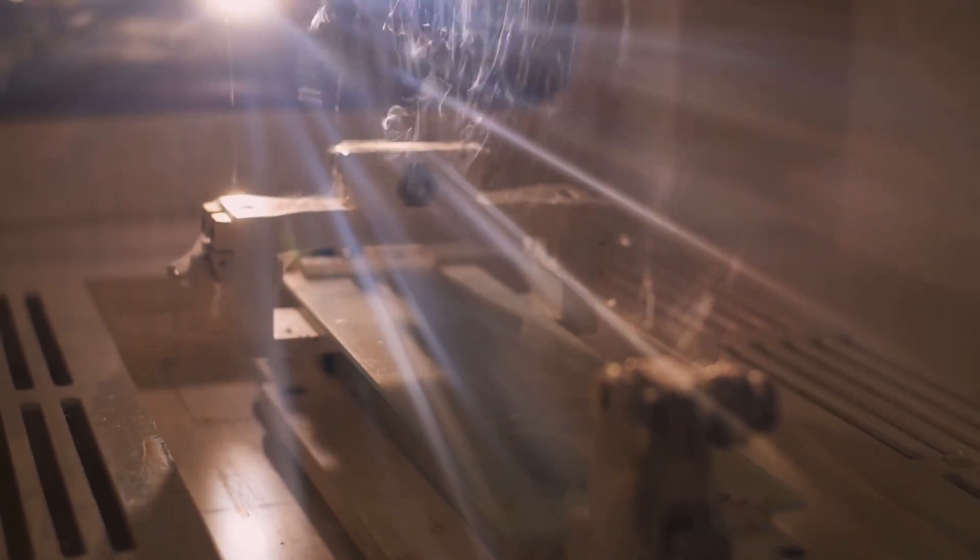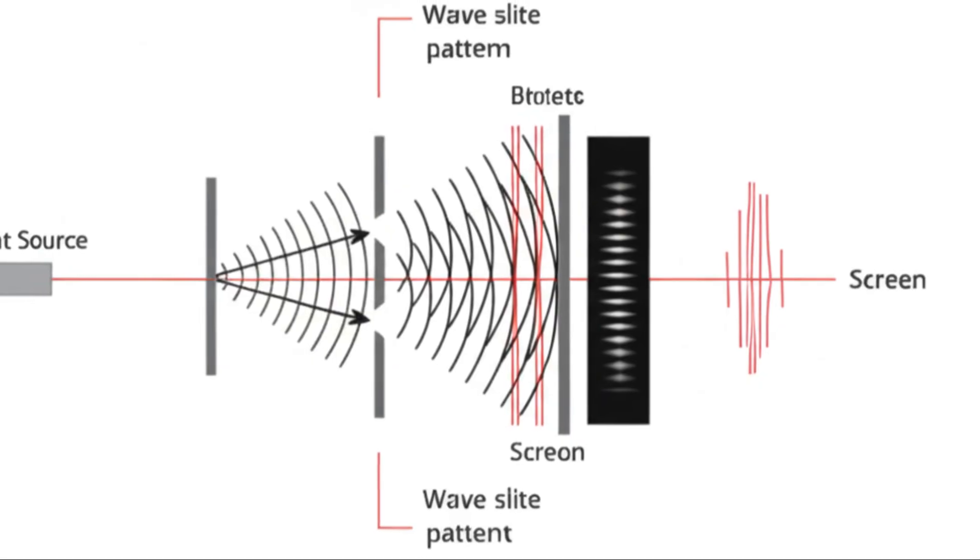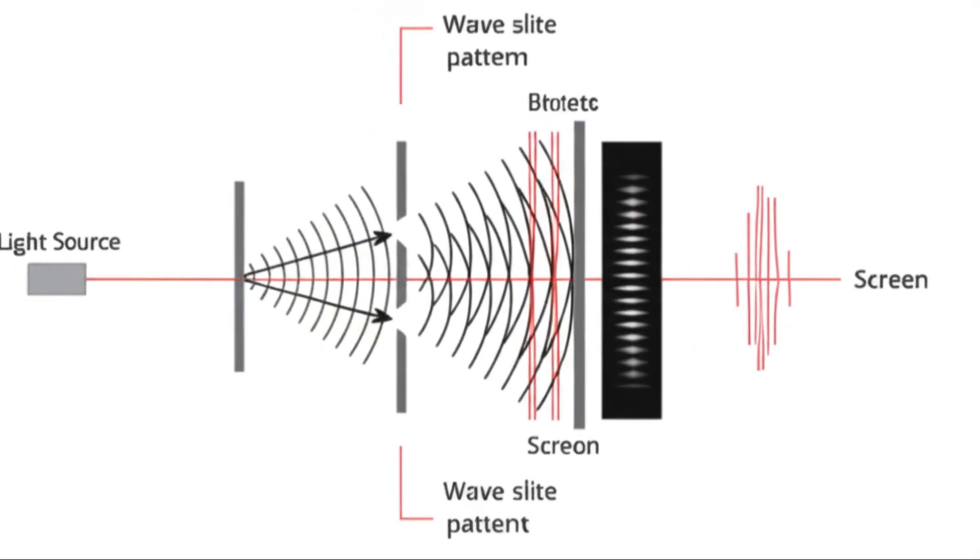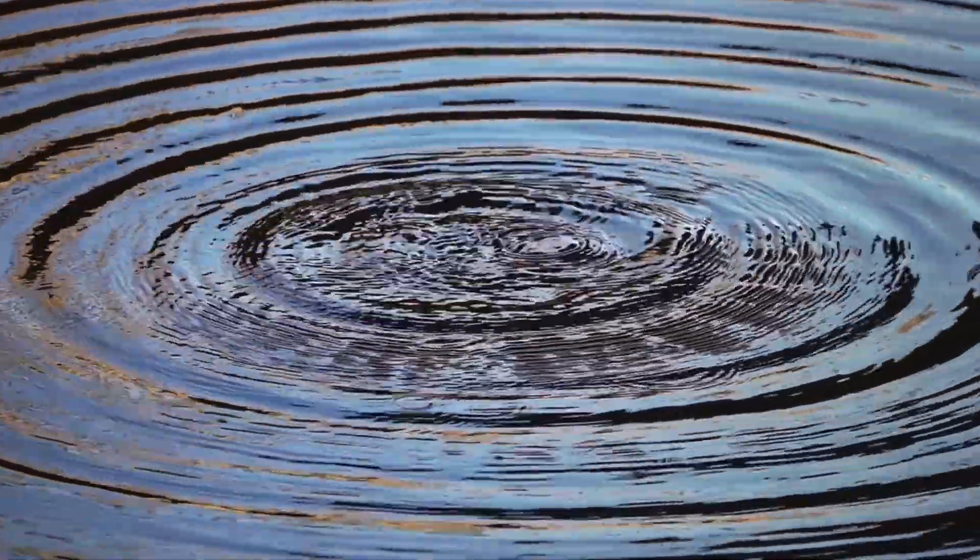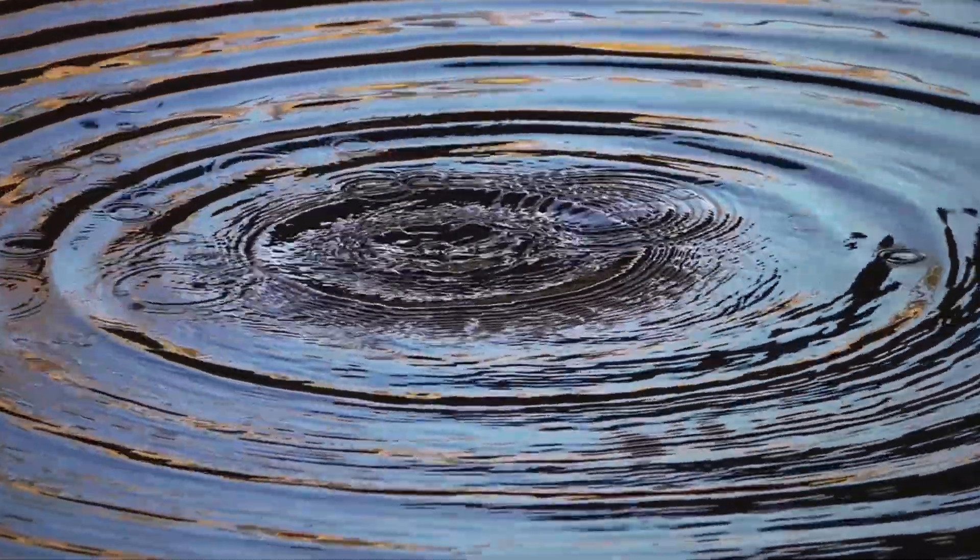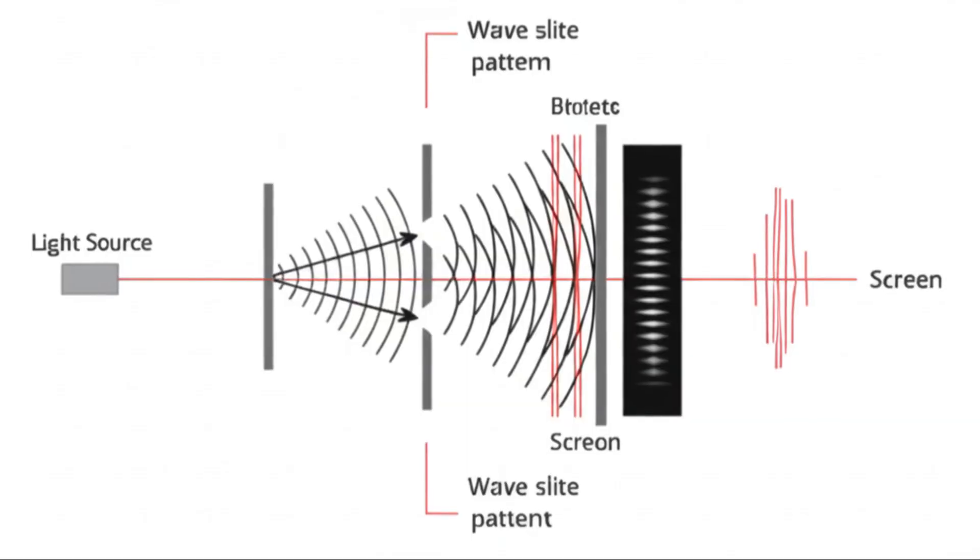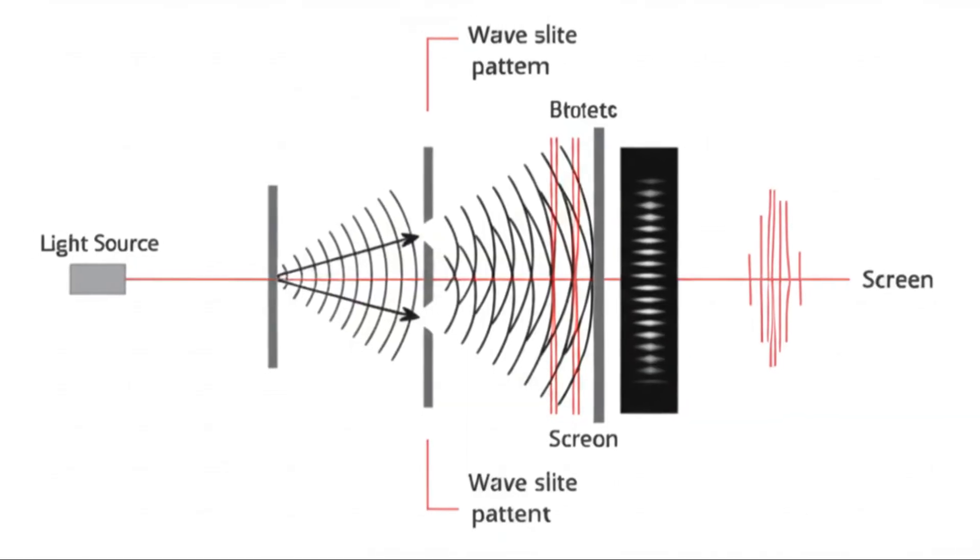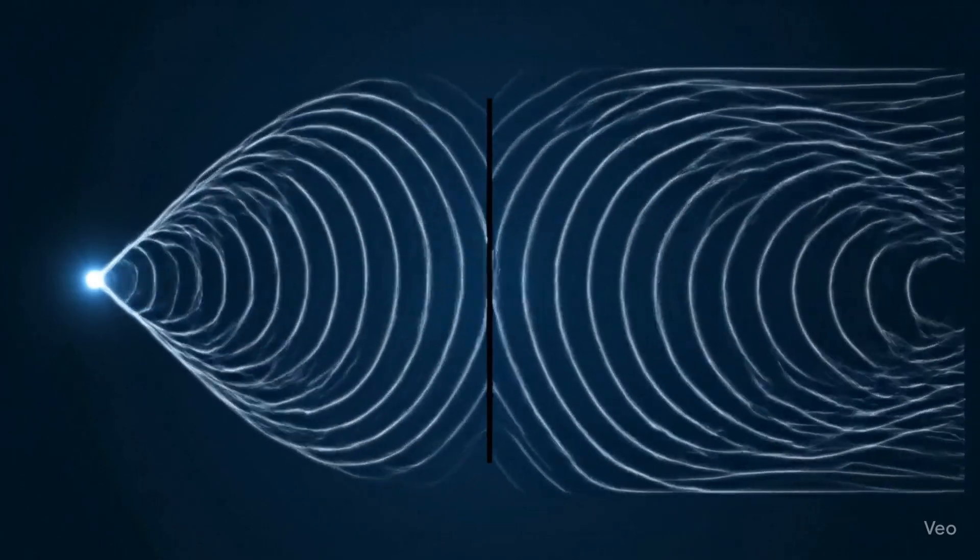If we simply fire the electrons without any way of knowing which slit they go through, they create an interference pattern on the screen. A series of bright and dark bands, just like waves of water would if you sent them through two openings. This suggests each electron behaves like a wave, passing through both slits simultaneously. It exists as a probability wave, spread out across possibilities.